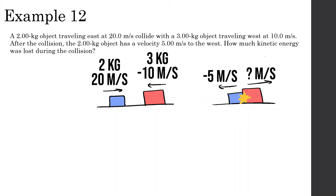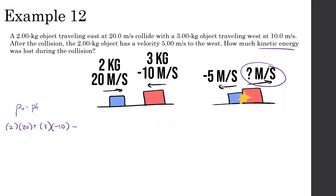Example number 12: A 2 kilogram object traveling east at 20 meters per second collides with a 3 kilogram object traveling at 10 meters per second west. After the collision, the 2 kilogram object has a velocity of 5 meters per second to the west. How much kinetic energy was lost during the collision? Before finding kinetic energy lost, let's find how fast the 3 kg block is going after the collision using conservation of momentum. Before: 2 kg at +20 m/s and 3 kg at −10 m/s. After: 2 kg at −5 m/s and 3 kg at unknown velocity.